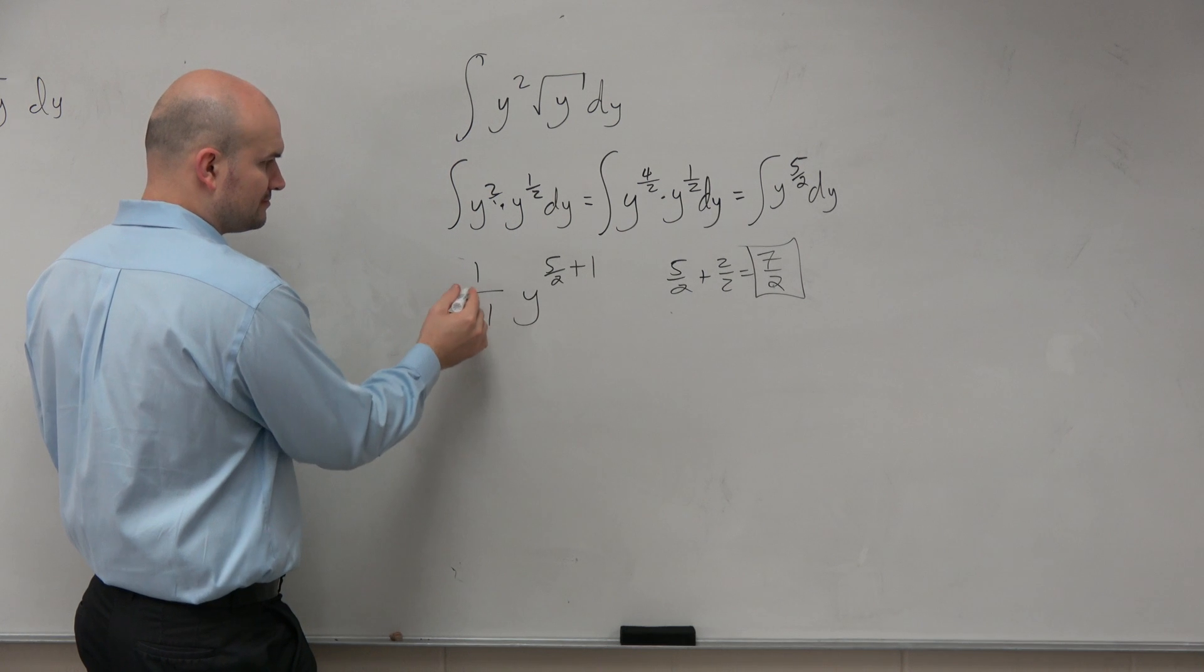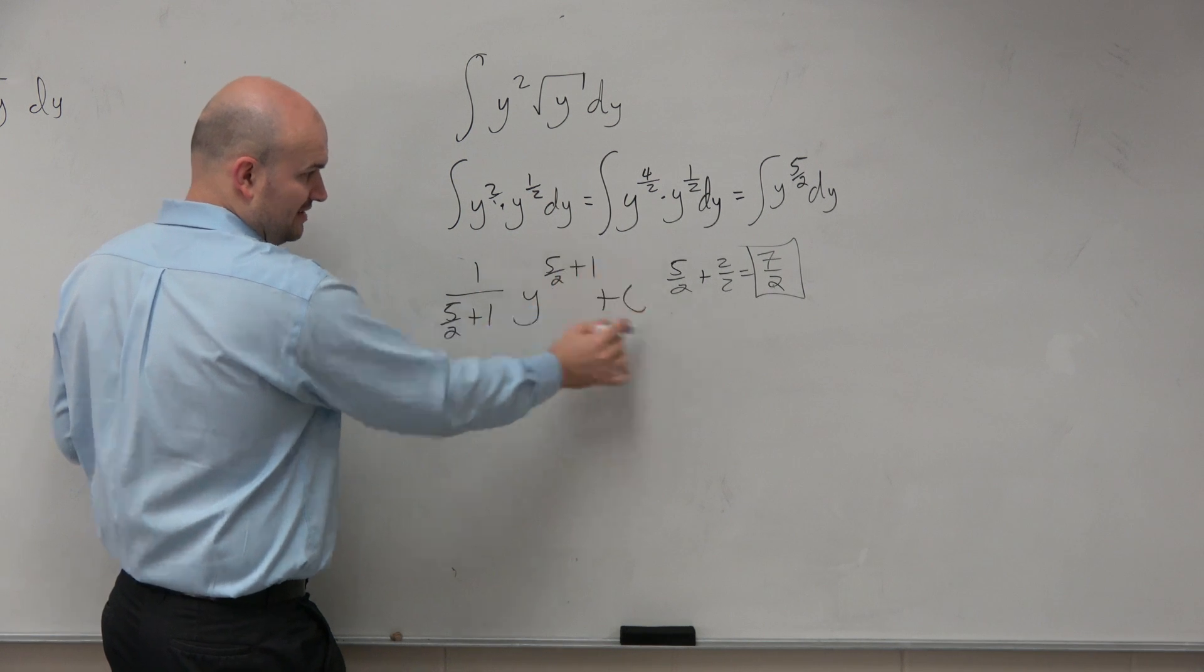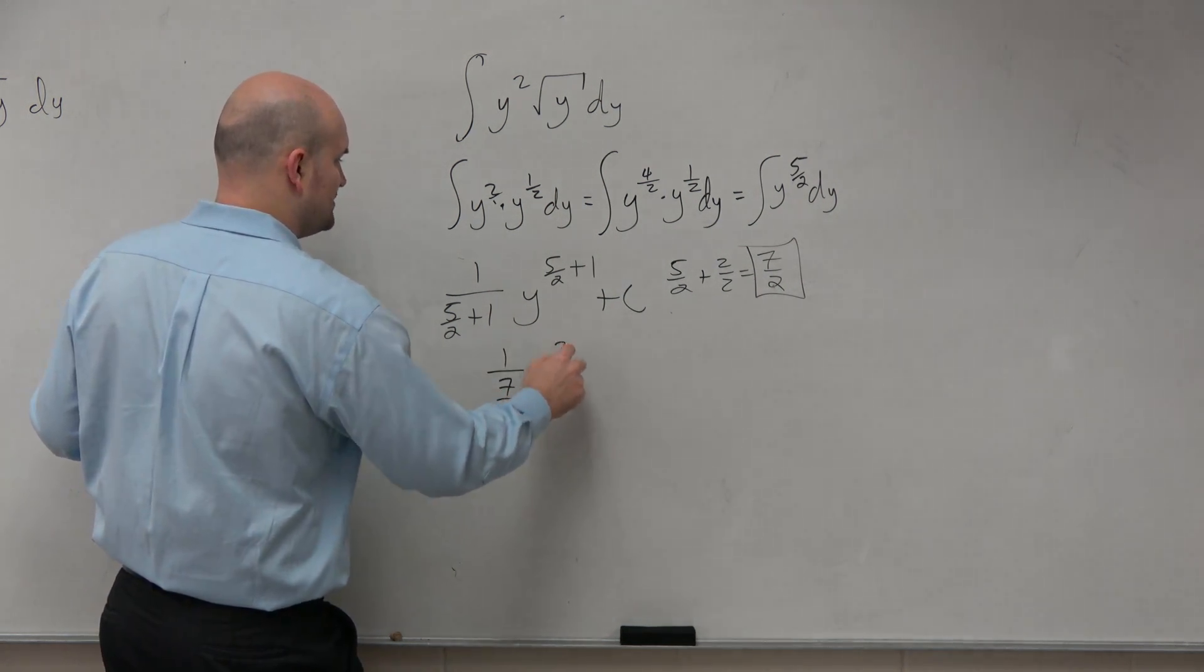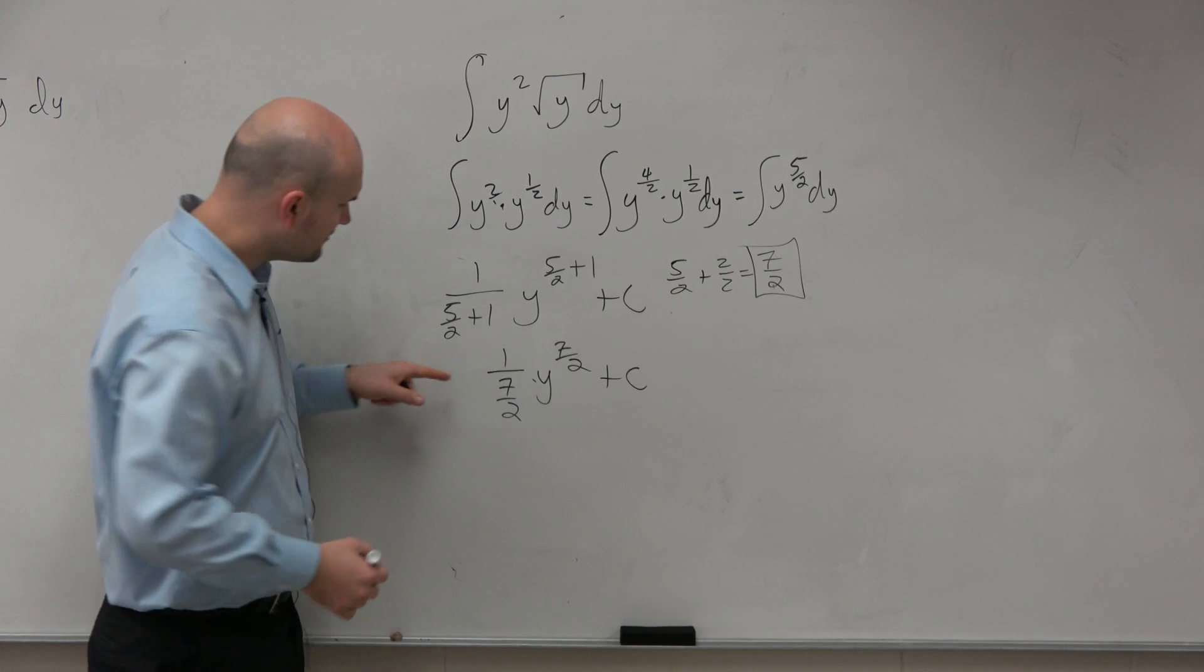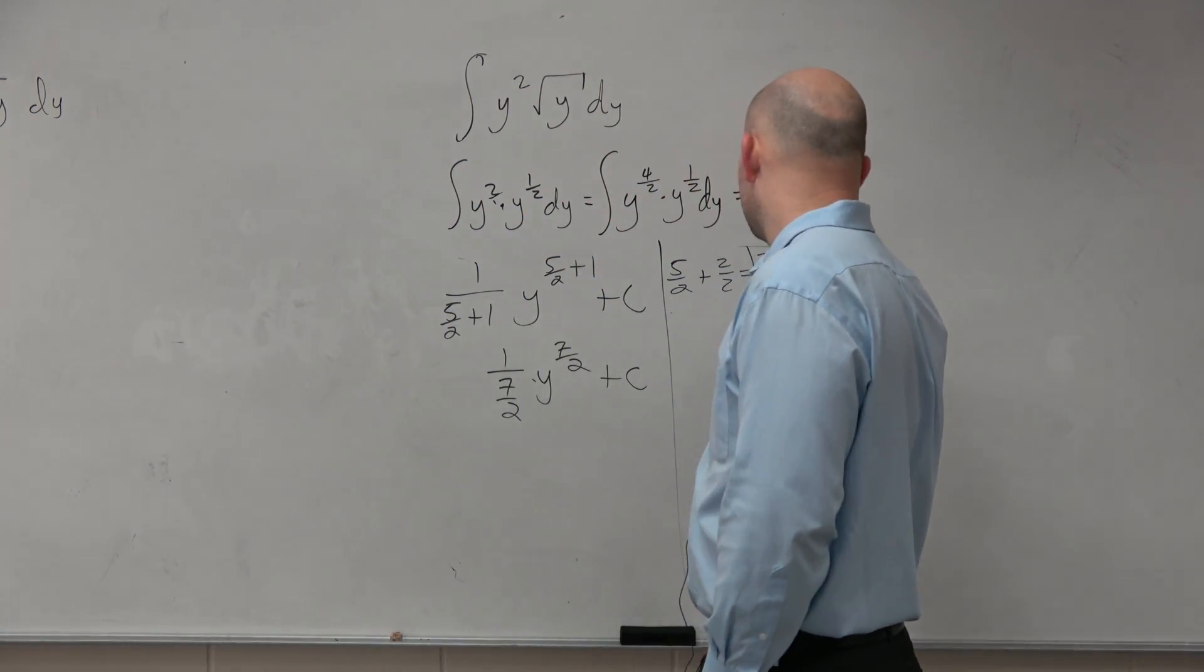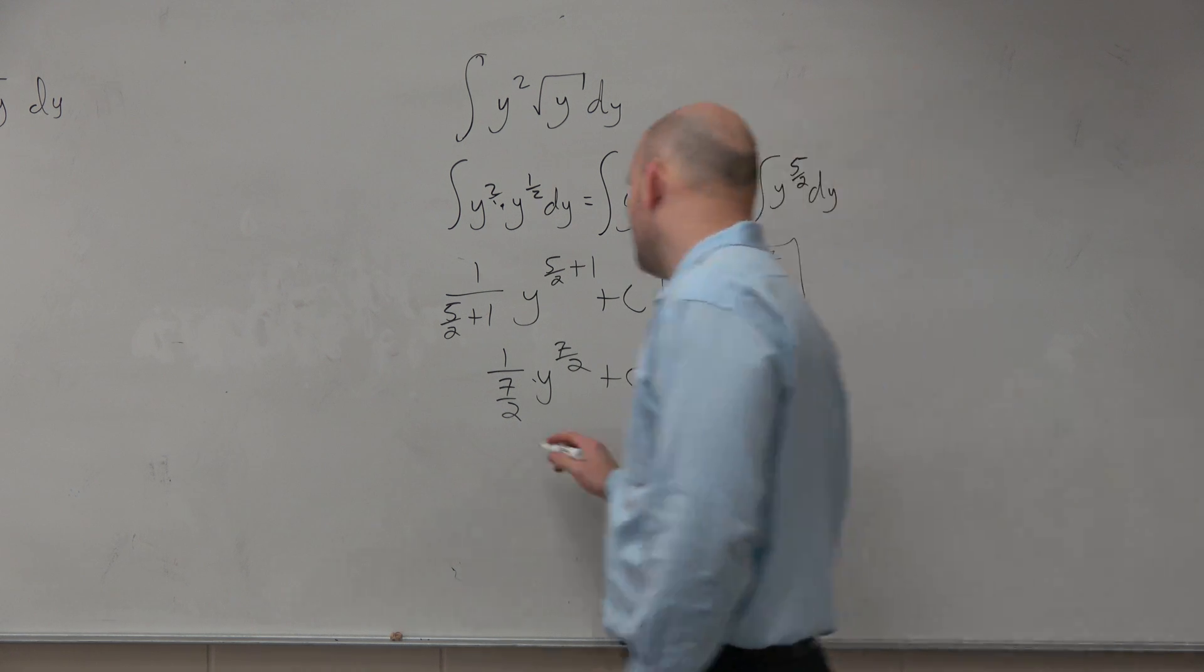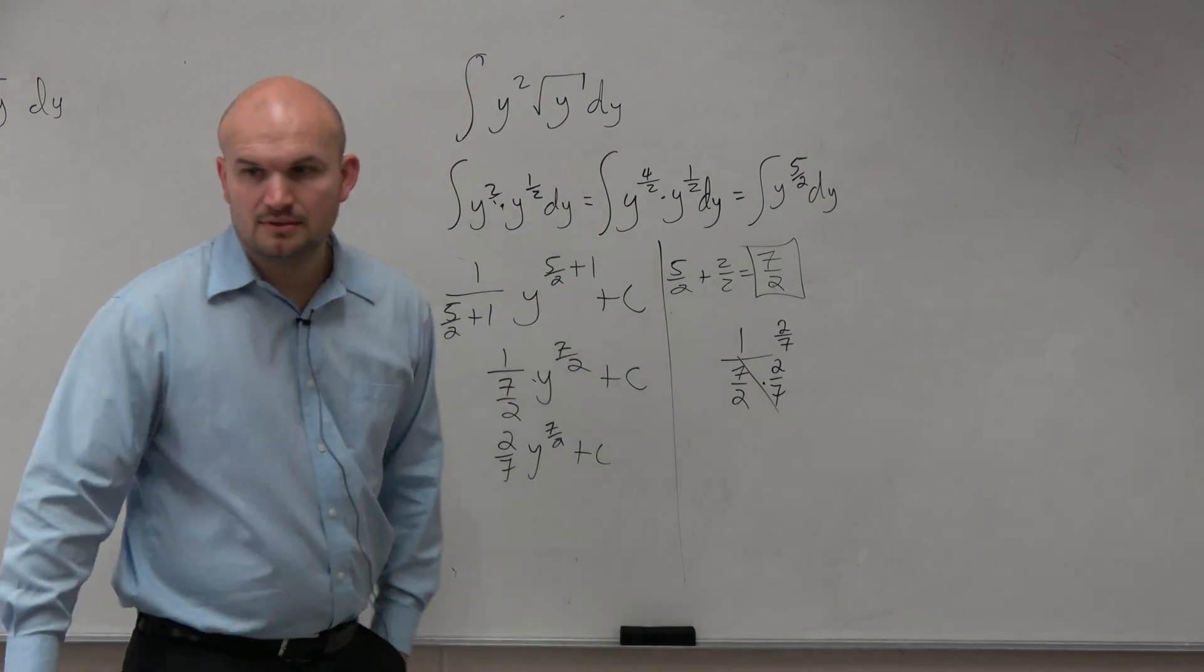So in reality, our integral, now let's go and simplify this. So technically, this is the integral non-simplified here. But 5 halves plus 1 is really 7 halves. So really, what we have is 1 over 7 halves times y to the 7 halves. Now again, what happens plus c? If I have 1 divided by 7 halves, again, to get rid of this denominator, I can just multiply by the reciprocal. And therefore, my final answer is 2 sevenths y to the 7 halves plus c. Is that what you got?